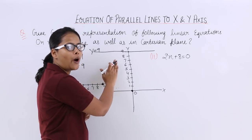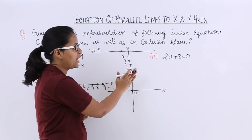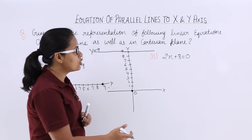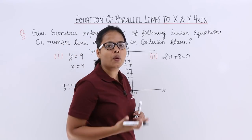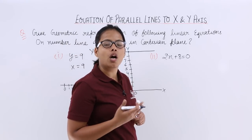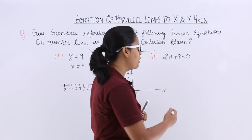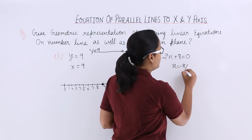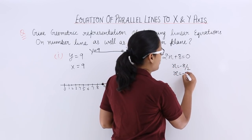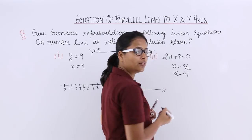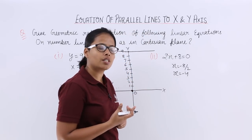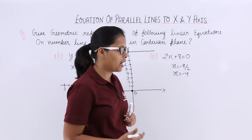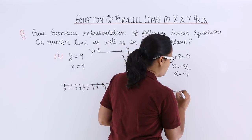That's how you will plot y is equal to 9 in a Cartesian plane. Now let's do this for the second part, which is 2x plus 8 is equal to 0. How you will do it? Let's solve it first: minus 8 by 2, so the value for x will be minus 4. You need to locate this point on a number line, so draw a number line.